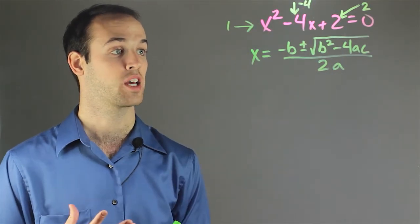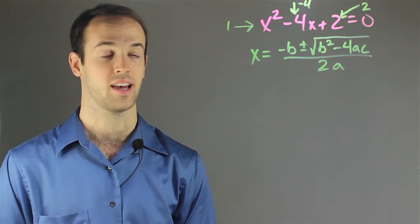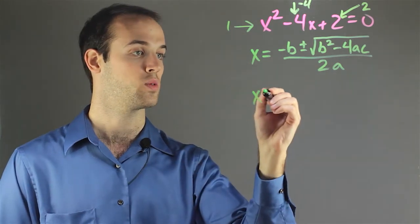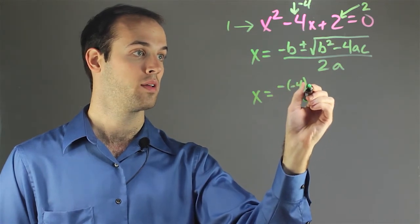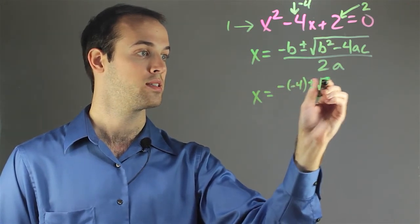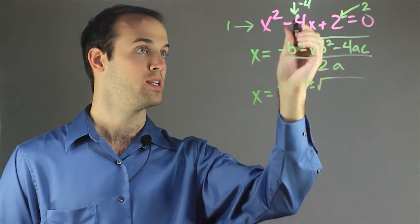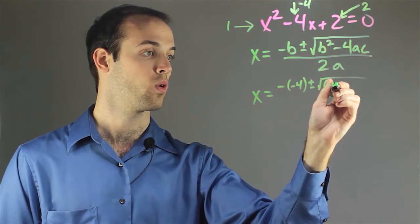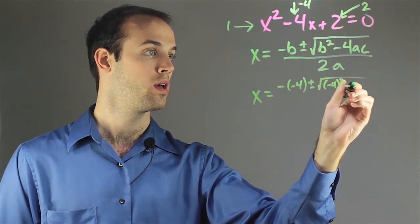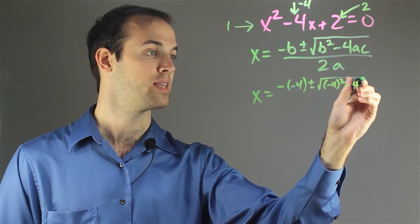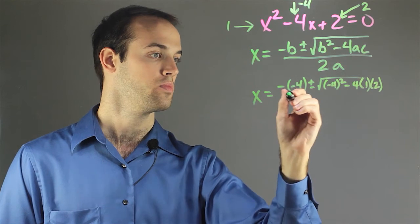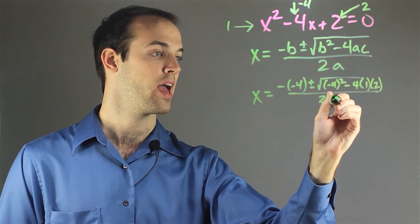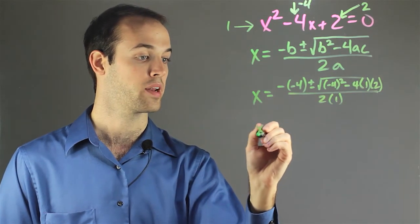And simply, I'm just going to plug in each of those values into this formula. So I have x is equal to negative negative 4 plus or minus the square root of b squared, which is negative 4 squared, minus 4 times a, which is 1, times c, which is 2, all over 2 times a, which is 1. And then I'm going to carry out the multiplication.